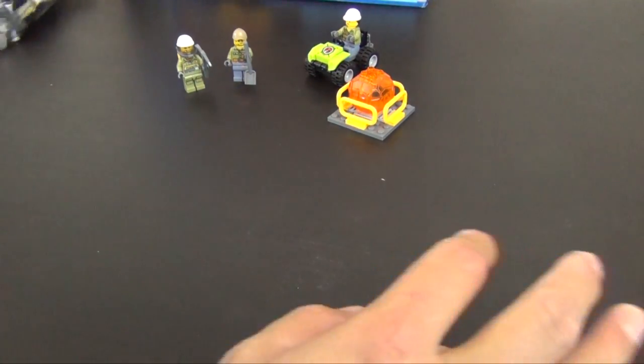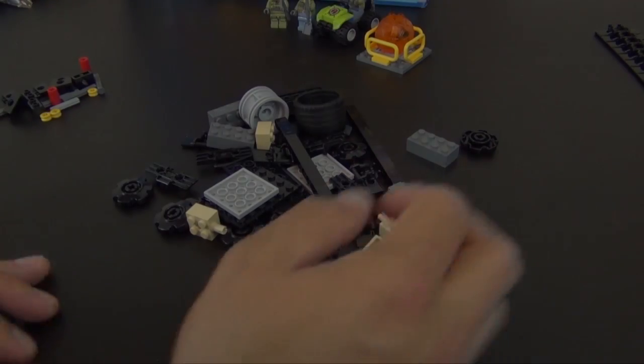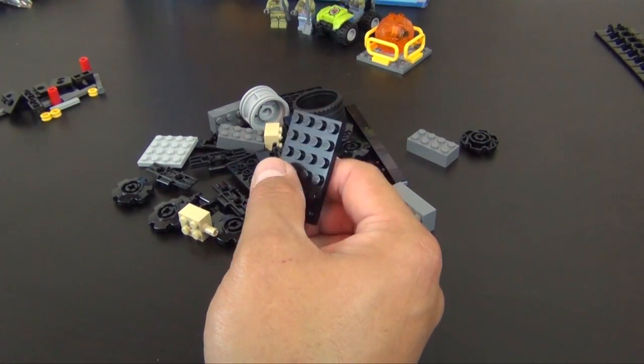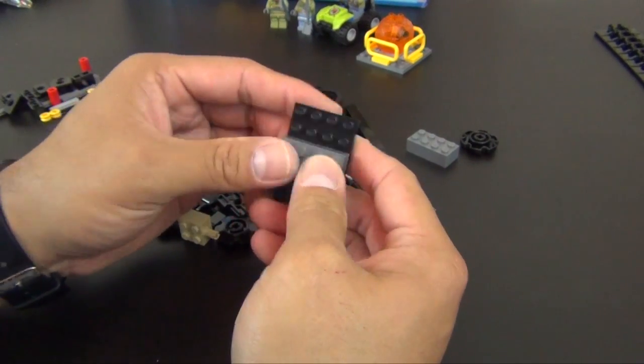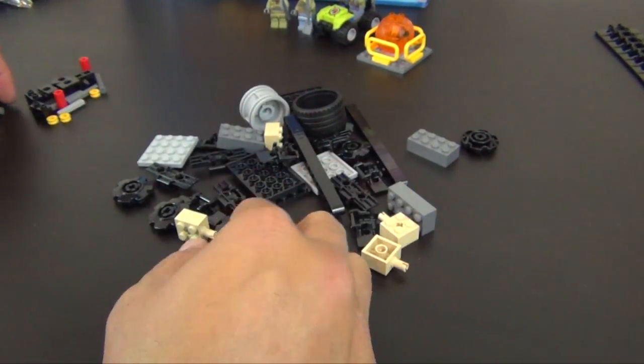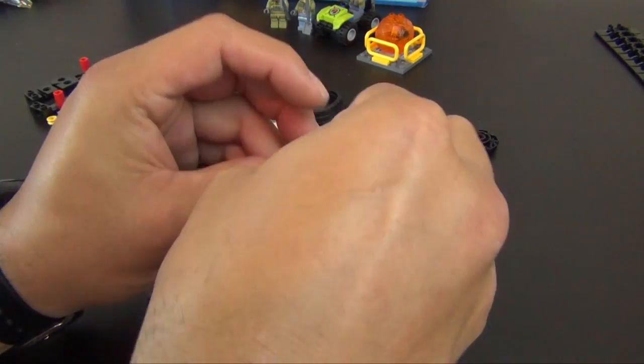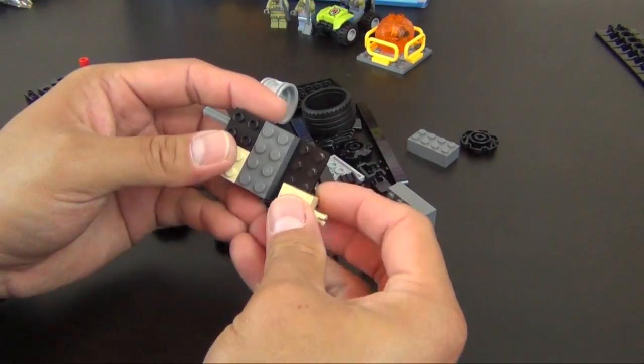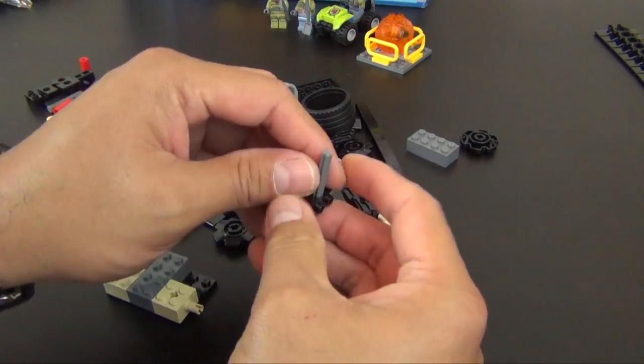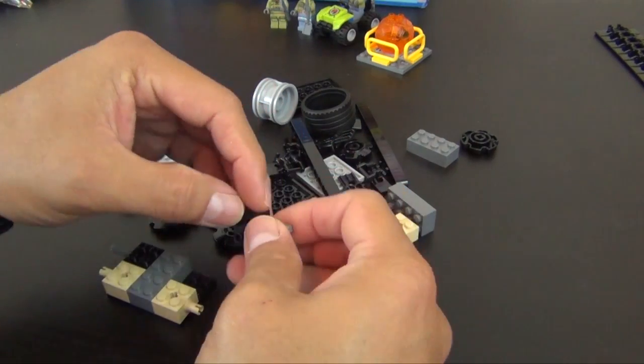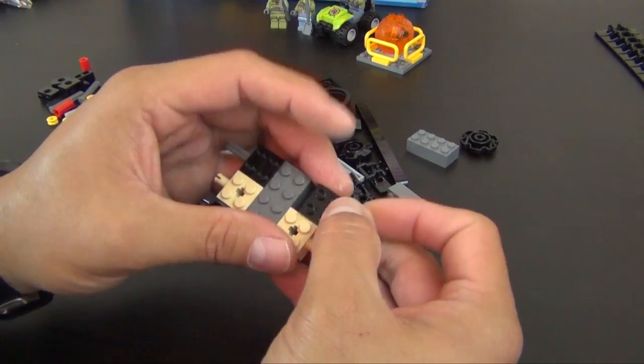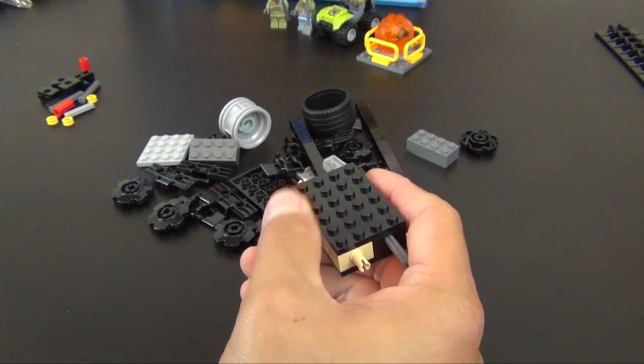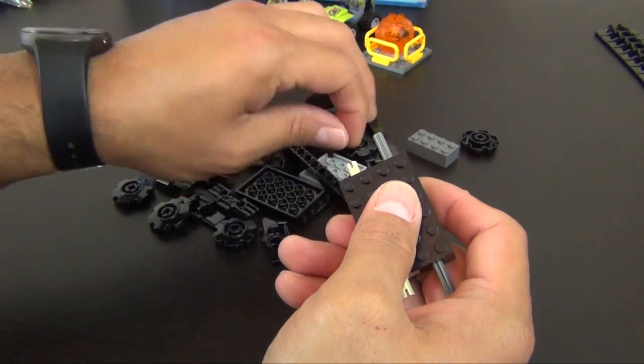Okay, with all the parts of bag two out, we're going to begin building our volcano crawler. We'll start with the four by six plate. We have a couple technic bricks with an axle with a stop. Two more technic bricks on the axle with a stop. Squeeze another plate on top of that. We have this technic lift arm.